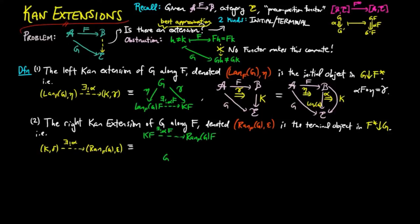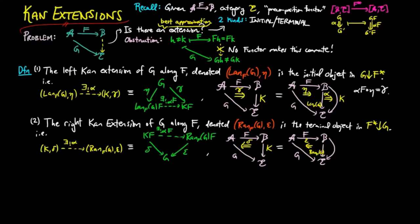which is equivalent to the following two diagram commuting, and in the one diagram of functors, giving us epsilon alpha F equal to delta.